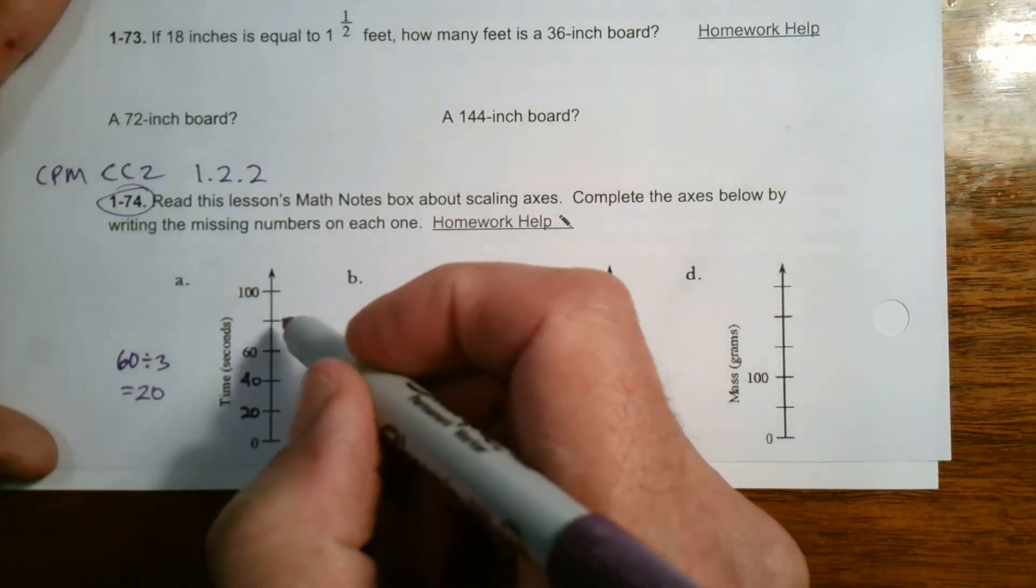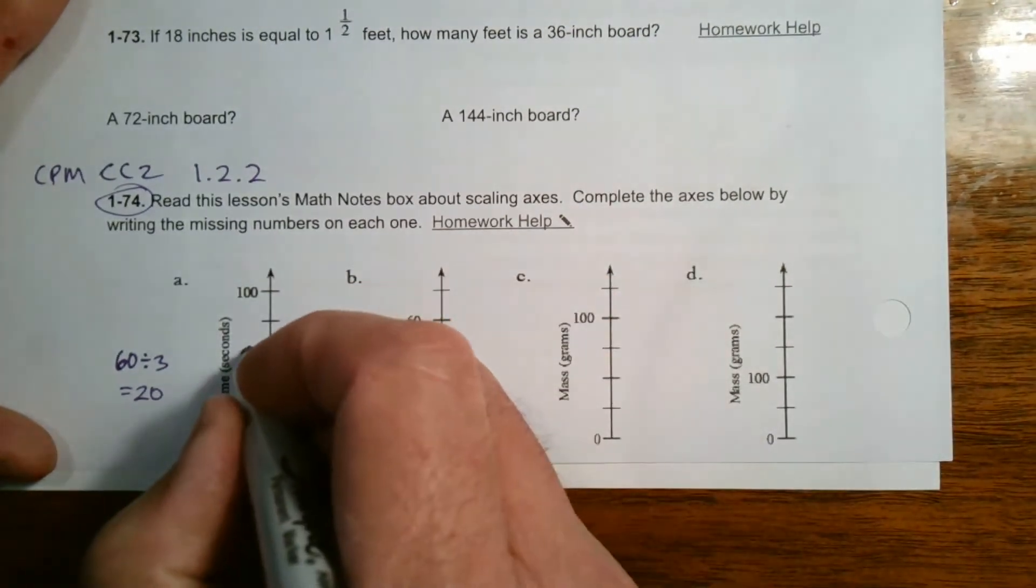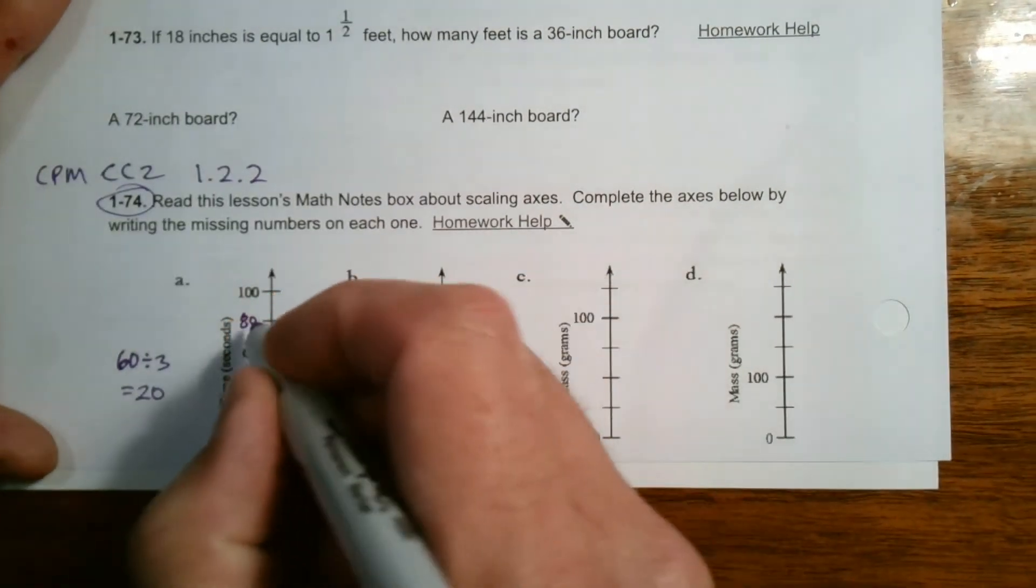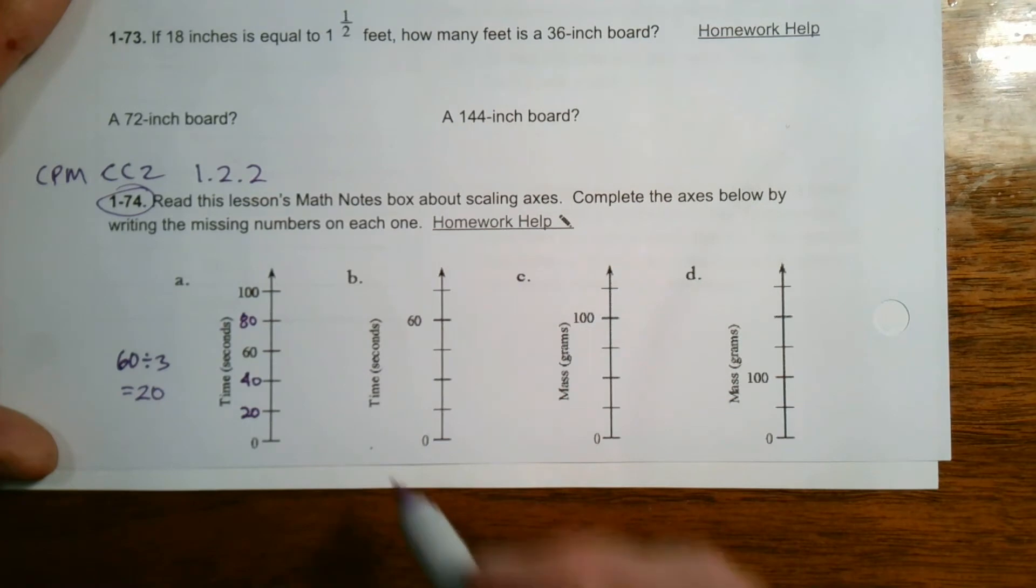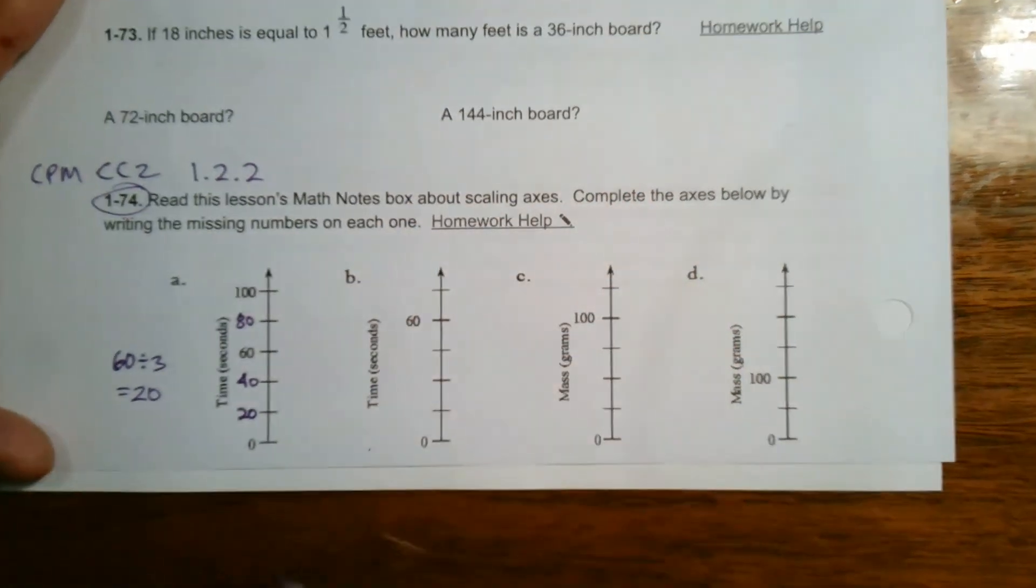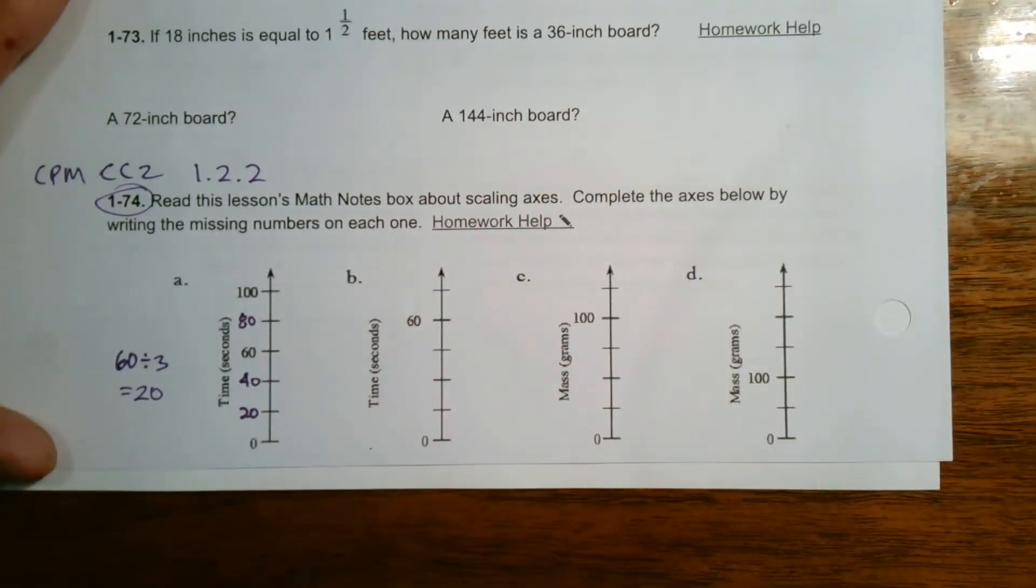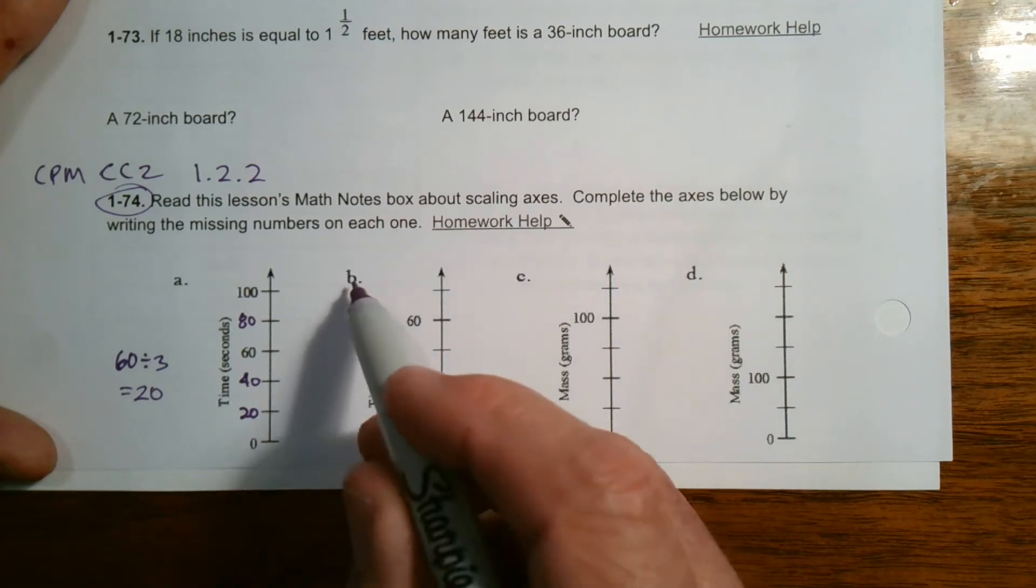Now let's check to make sure that's still working as I get to 100. Another 20 makes that 80, and then another 20, there I'm at 100. So that's completing that scale with even spacing. We need to do the same thing over here in part B.